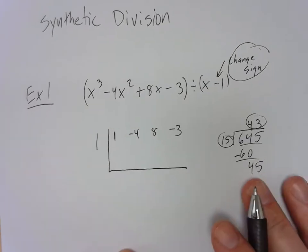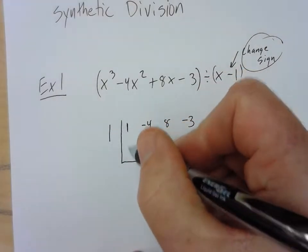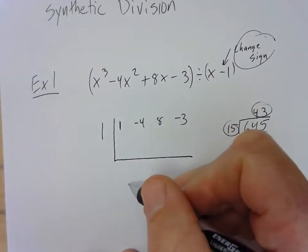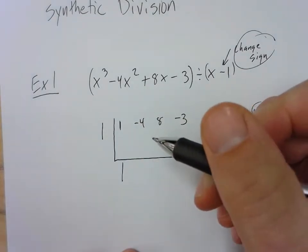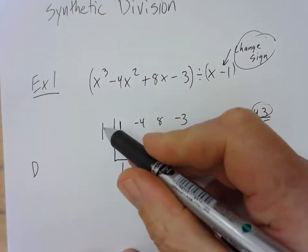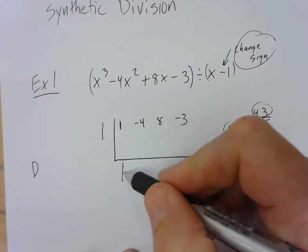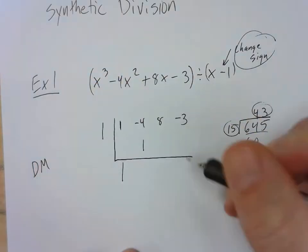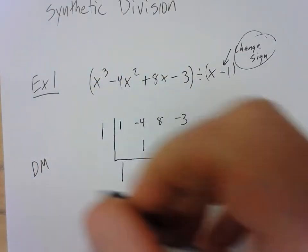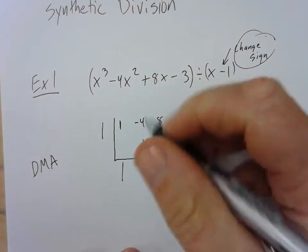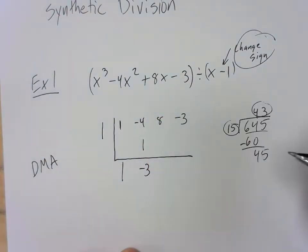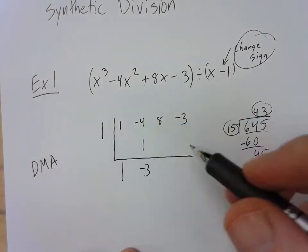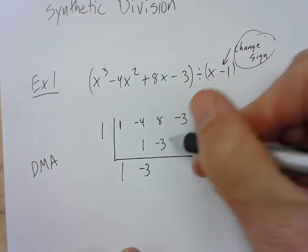So here's the process that we go through to do this. The first thing we do is we drop down this number right here to prime the pump so to speak, to get the process going. So I take this 1 and I drop it straight down. Then I go ahead and I multiply these two numbers together. 1 times 1 is 1. So that was multiply. Now instead of subtracting these two numbers, I get to add the two numbers together. So I add these two together, negative 3. Then I start over again with the multiplying process.